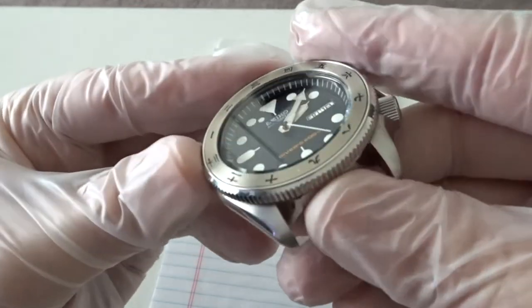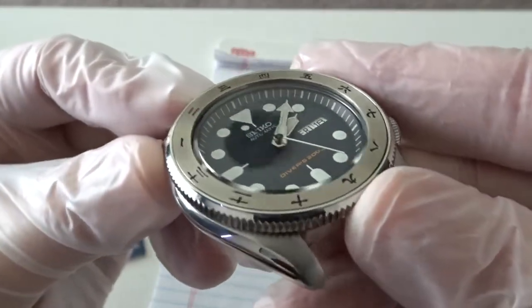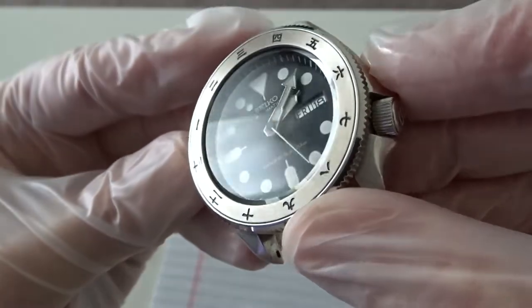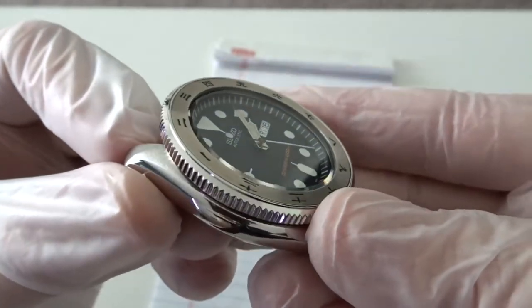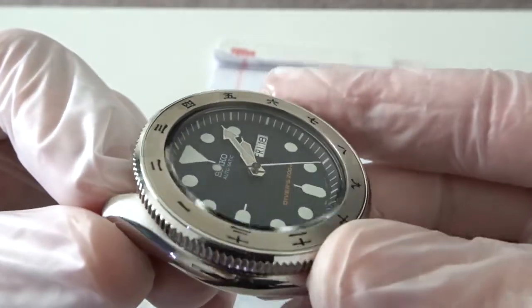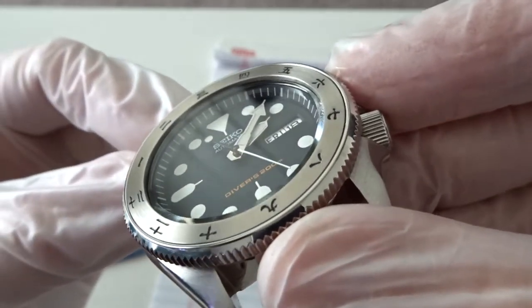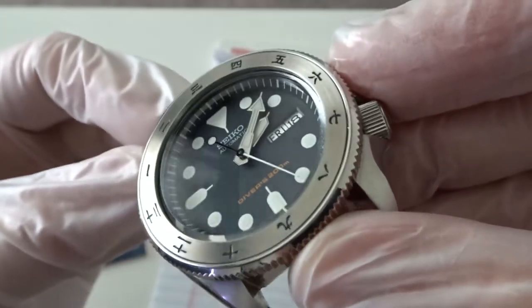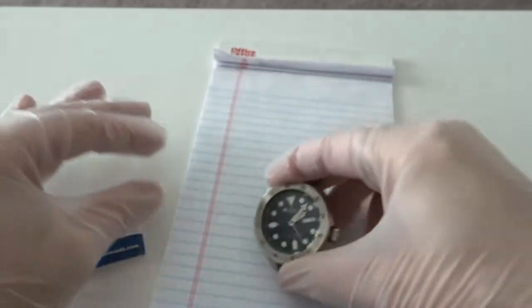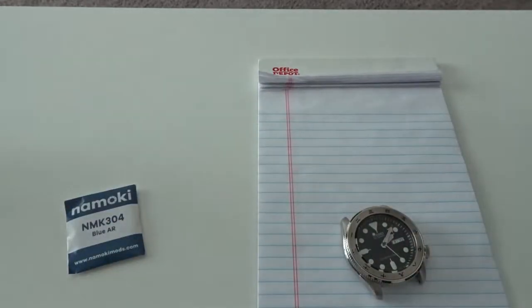Now I realize that the majority of people with this or a similar watch where mod parts like this are available have no intention of replacing the crystal themselves. Either they are happy with the OEM Hardlex crystal, or if they want to replace it they would pay someone else to do it. This video is just to show that it's one of the simpler mods if you have a few inexpensive tools.